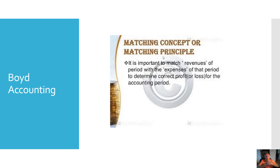The next principle is the matching concept. What we're trying to do is match revenue with expenses. If we've earned revenue, we want to match the expenses associated with it. Revenues are recognized — what are the expenses around them? Expenses should be reported when the revenue is earned. Don't forget these two accounting principles — debits equal credits, and matching. You'll find them very helpful in everything you do.